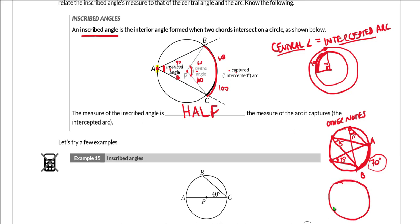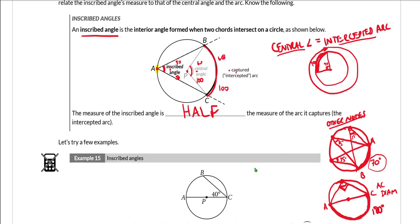Another thing to keep in mind: if you have an inscribed angle whose two chords have non-intersecting endpoints that are endpoints of a diameter — so if AC is a diameter — then the inscribed angle is a right angle. A diameter cuts off an arc of 180 degrees, and the inscribed angle being half of 180 degrees will be 90 degrees.